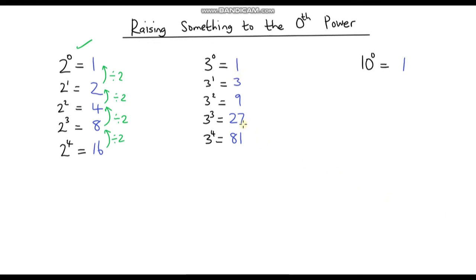Again this time instead of dividing by 2, to go from 81 to 27 we're dividing by 3 because this is just one less 3 than this one. To go from 27 to 9 we're dividing by 3, and from 9 to 3 we divide by 3. So if we follow the same pattern, do 3 divided by 3, we still get 1.